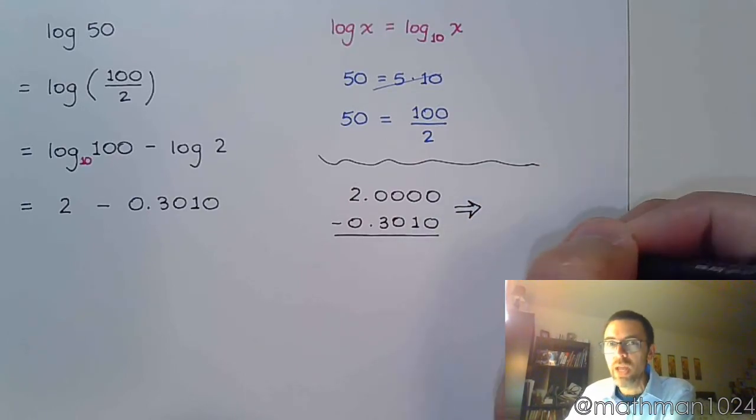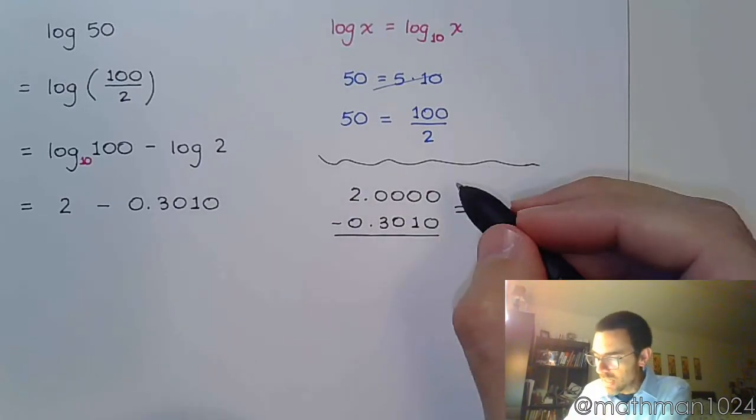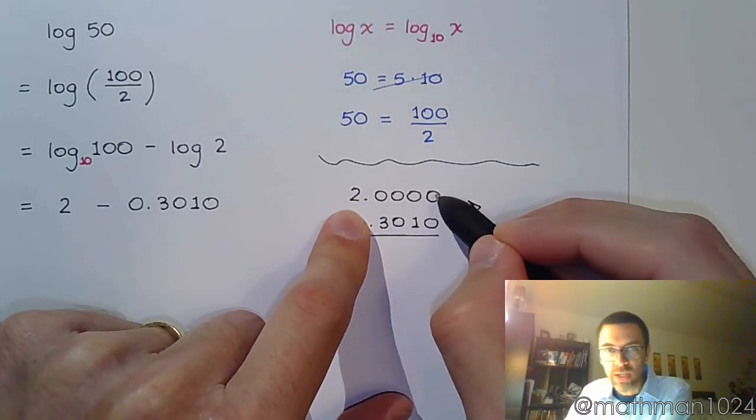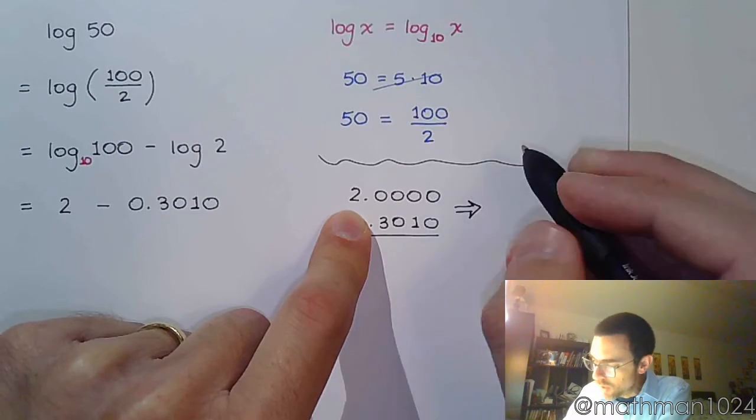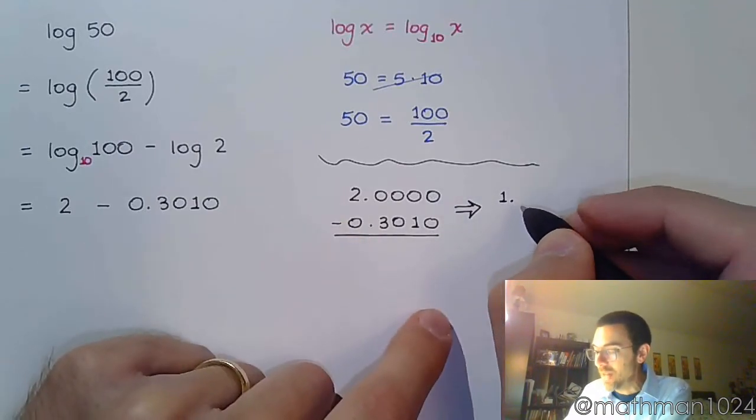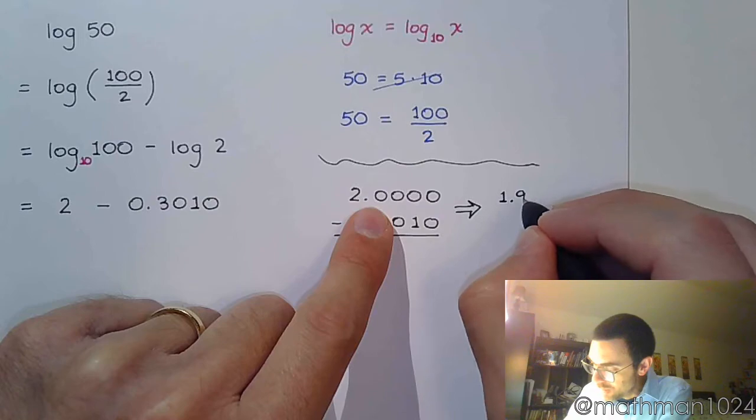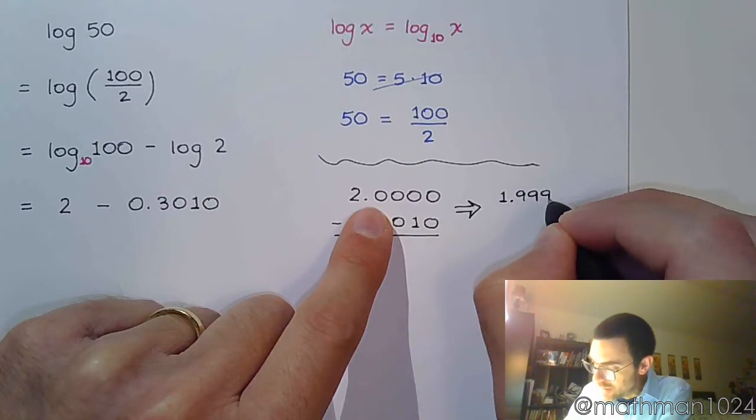Instead of doing borrowing, do this. Take 1 off of this guy. If you take 1 off of this, or I guess that's 1.10000, that becomes 1.9999.